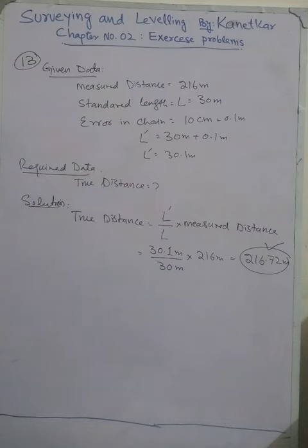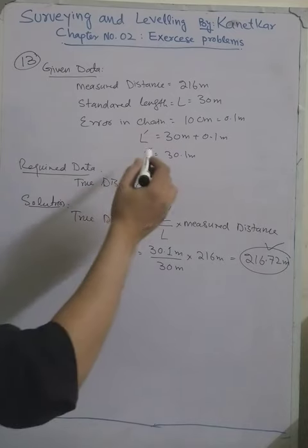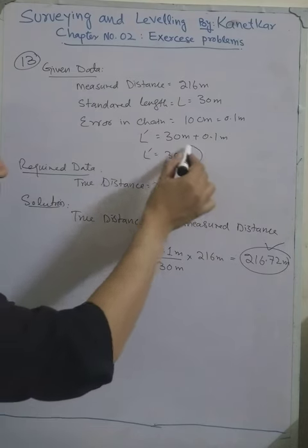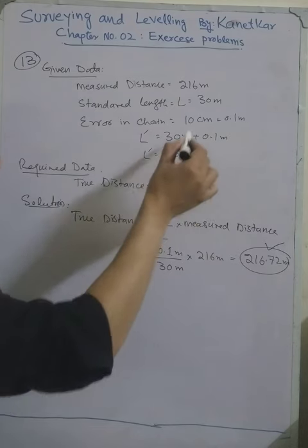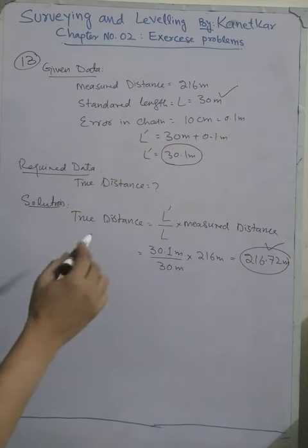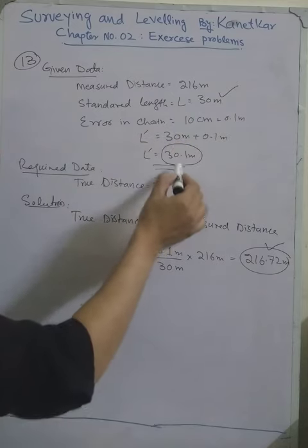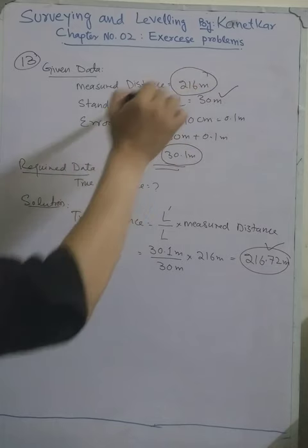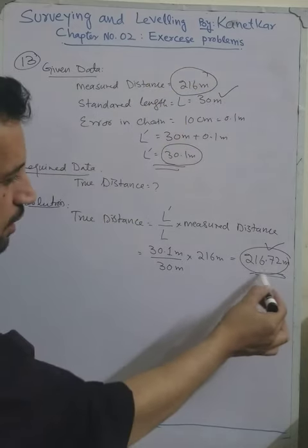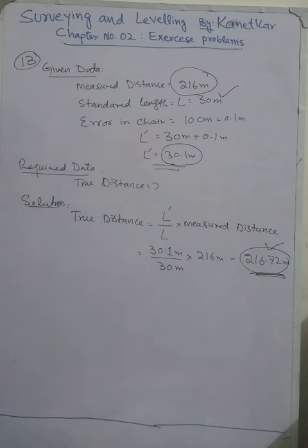Remember: when the length of the chain during measurement is longer than the standard length, the measured length of the line will be less than the true length. Since the chain was 30.1 meters — greater than the standard — the measured 216 meters is less than the true distance. This is called a negative error, and the correction will be positive.